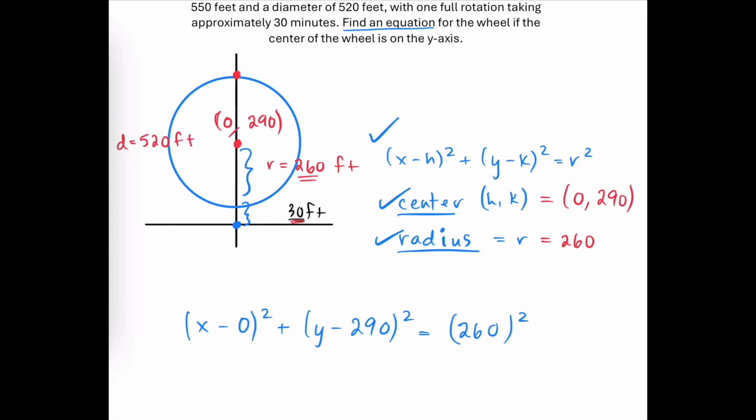So we simplify a tiny bit by calling this x-squared, plus y minus 290 quantity squared, and 260 squared is 67,600.